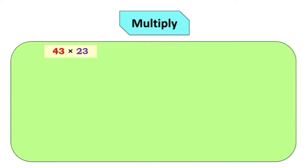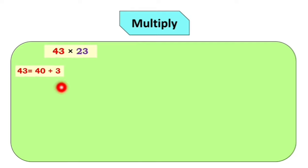Now let's take one more example: 43 × 23. 43 is the multiplicant and 23 is the multiplier. Aata aplellai the 43 cha expanded form right karaichya aahe: 43 cha expanded form asna rahe 40 plus 3 is equal to 43. Aani 23 cha expanded form: 20 plus 3 is equal to 23.